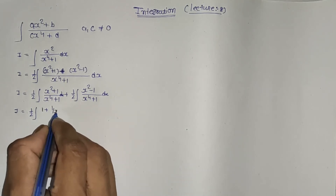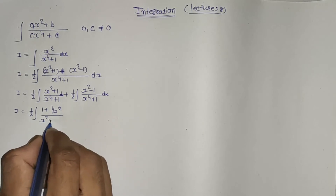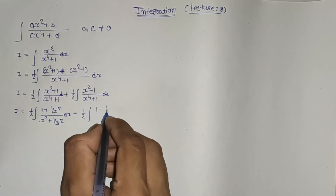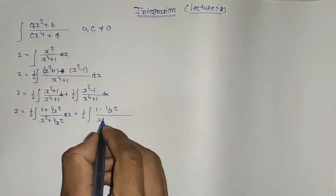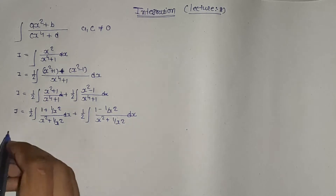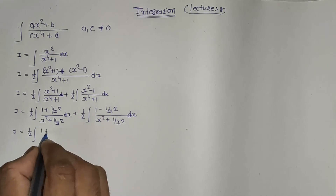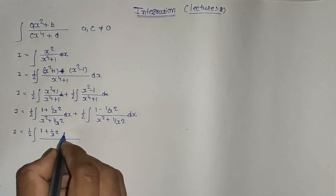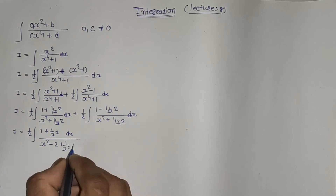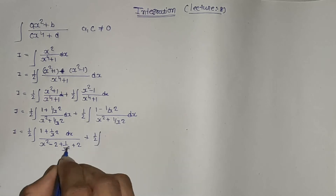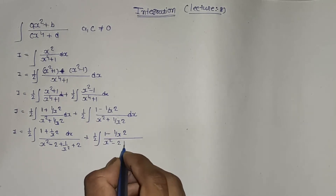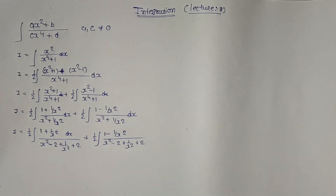Divide by x² to get (1 + 1/x²) divided by (x² + 1/x²) dx, plus one-half integration of (1 - 1/x²) divided by (x² + 1/x²) dx. We get x² - 2 + 1/x² + 2 in the denominator for the first part, and x² - 2 + 1/x² + 2 for the second part.